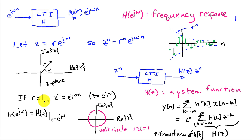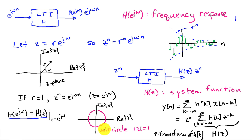If r is equal to 1, then z^n is just e^{jωn}, because z = e^{jω}. So the frequency response H(e^{jω}) can be expressed as the system function H(z) evaluated at z = e^{jω}. In the z-plane, when the magnitude of z is 1 — on the so-called unit circle — the frequency response is obtained from the system function. The system function exists for any value of z, but we get the frequency response when we evaluate it on this unit circle.